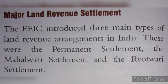Major Land Revenue Settlement means प्रमुख भूराजस्व बंदोबस्त। The East India Company introduced three main types of land revenue arrangements in India: the Permanent Settlement, the Mahalwari Settlement, and the Ryotwari Settlement.